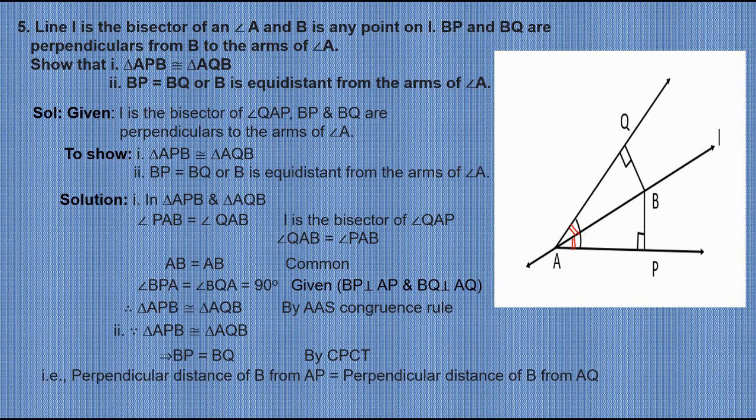That is, the perpendicular distance of B from AP equals the perpendicular distance of B from AQ. Thus B is equidistant from the arms of angle A. Hence, solved. Moving on to question number 6.